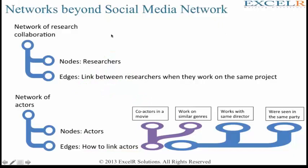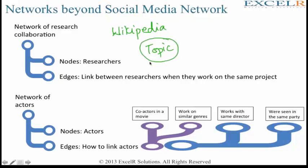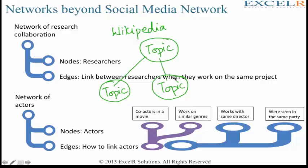On Wikipedia, for example, if you search for a topic, that topic would in turn have a lot of hyperlinks. If you're searching for a specific topic within a particular article, there might be links to various other topics. If you try to establish a network for the various topics within the topic you are searching for, you can establish what are the different connections available between this topic and other topics - whether one subject is related to the other subjects under discussion.